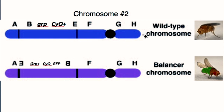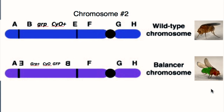A fly that has two copies of normal chromosome 2 will be a double mutant for the grapes gene. A fly that has chromosome 2 as a balancer chromosome will have curly wings, will glow green, and will also have a wild type copy of the grapes gene.